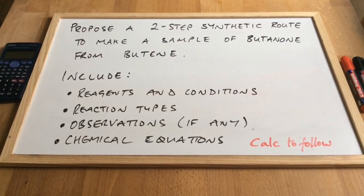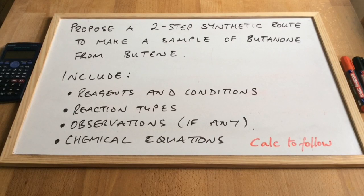I'm going to look at a typical synthesis question. We've got it on the board there: propose a two-step synthetic route to make a sample of butanone from butane. We're told we need to include the following: reagents and conditions for both steps, the types of reaction, any observations, and chemical equations. After we go through the answer to this part, I'm going to throw in a calculation that could be asked.